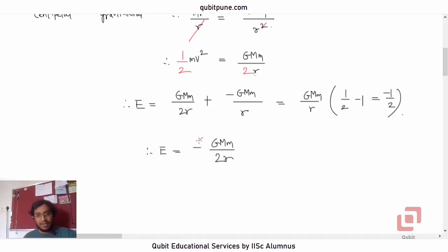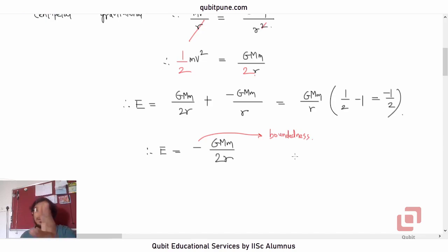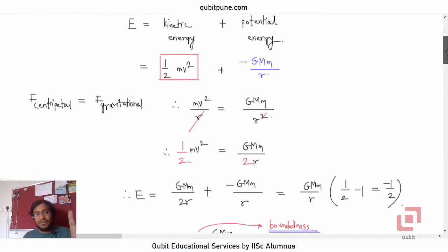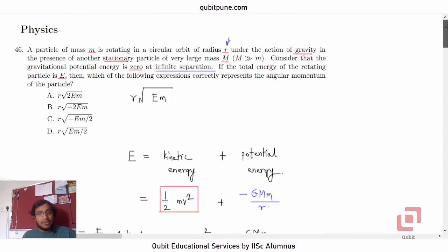The negative sign indicates that the particle is bound — it is not going to lose its trajectory. Even in the Bohr model of the hydrogen atom, the total energy is negative, representing the condition that the particle is bounded. Our job now is to calculate the angular momentum. We have so far calculated energy e in terms of G, M, m, and r, but we want the angular momentum L, which in magnitude equals mvr.